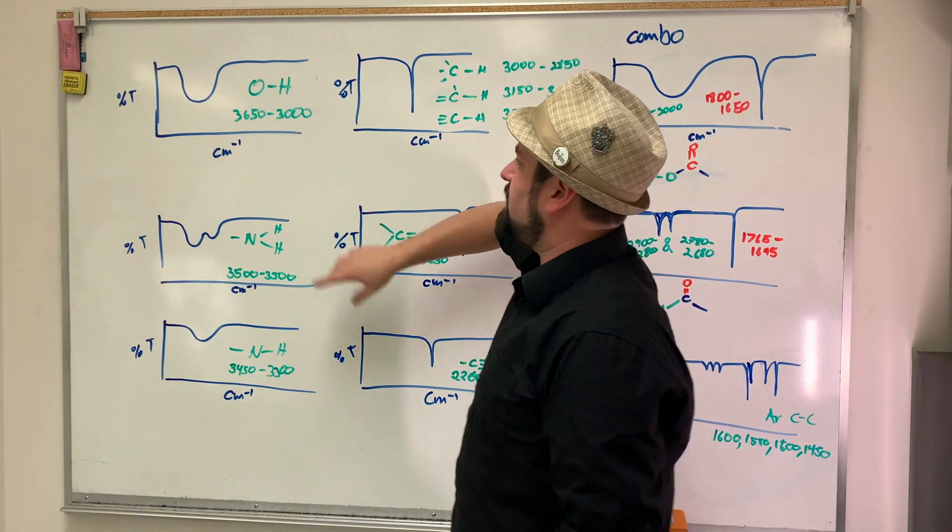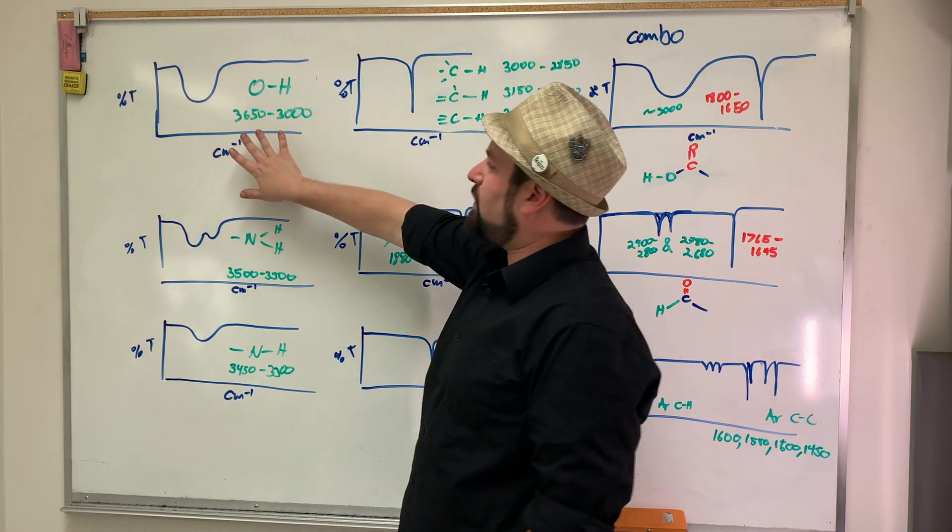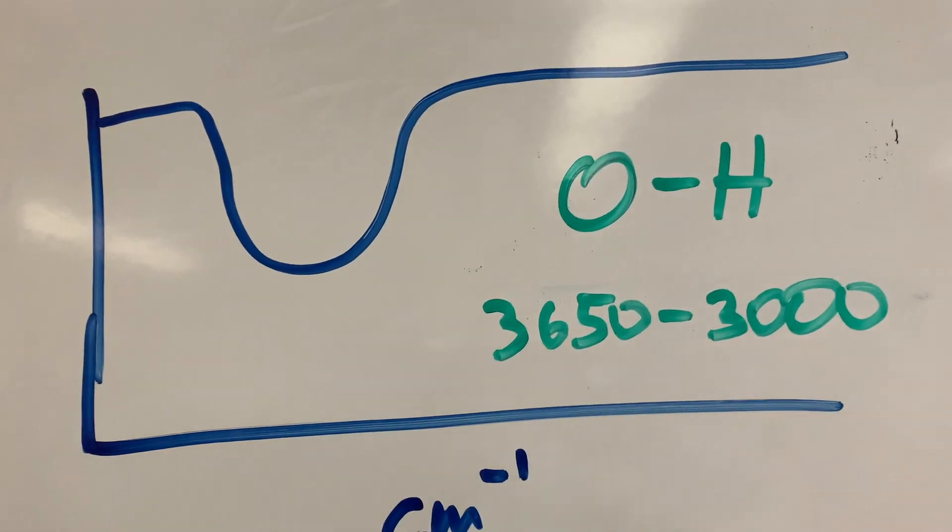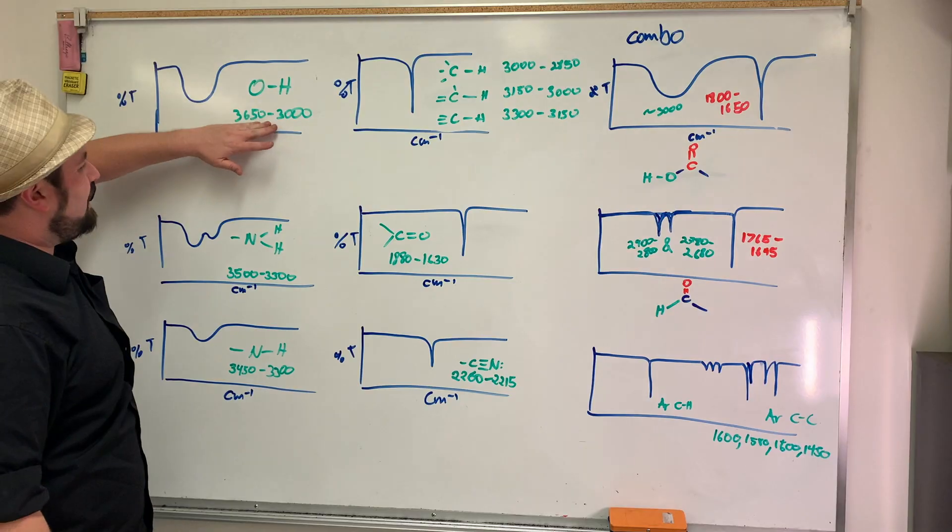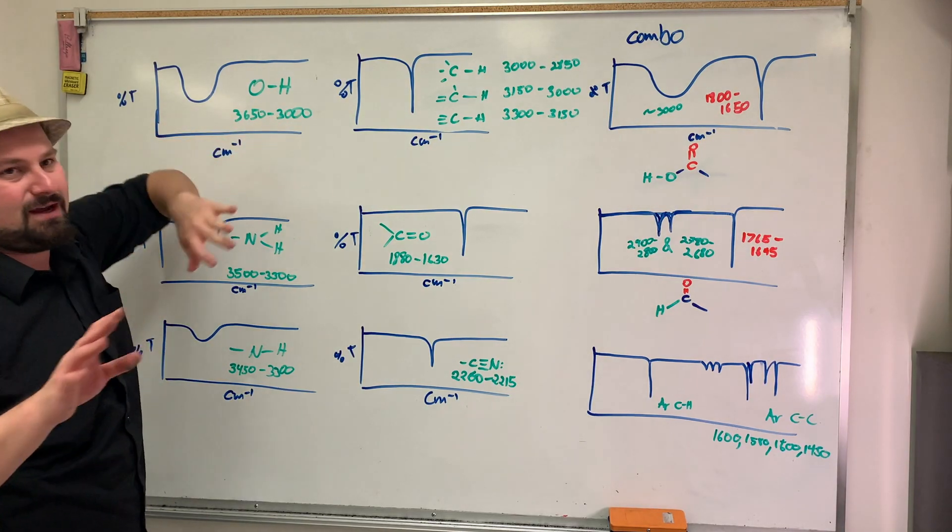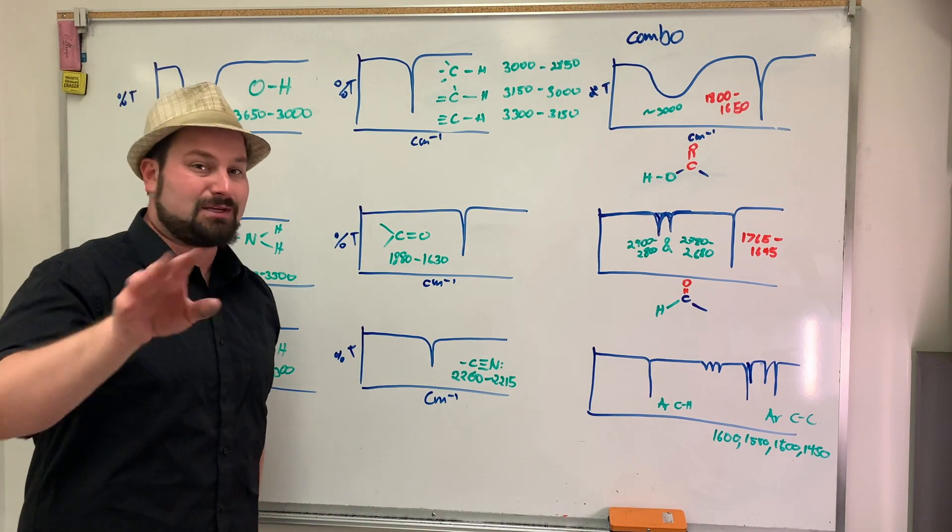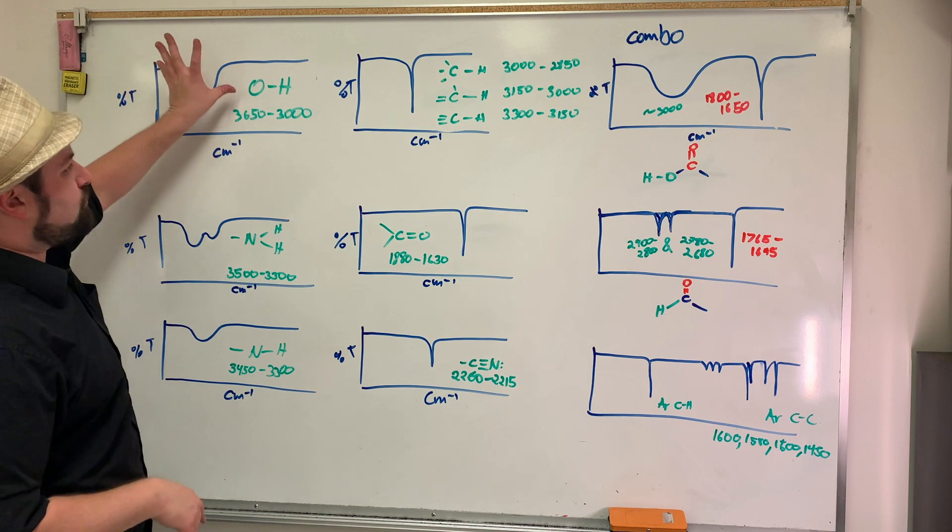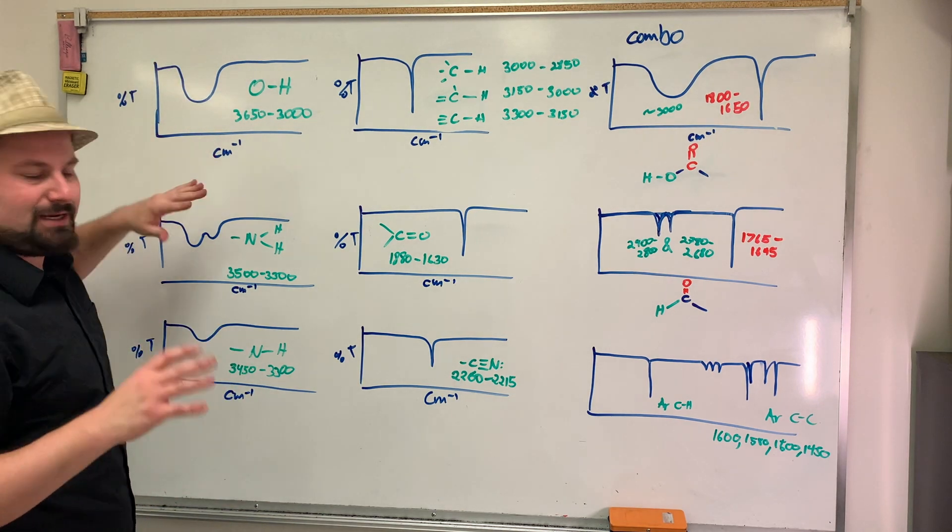In general, what we have here is the OH stretch. All of these pretty much are going to be stretches. The OH is going to be between 3650 and 3000. Remember, there's more than one way to have an OH. An alcohol is just one of them. But it's going to be broad, fat, and pretty big.